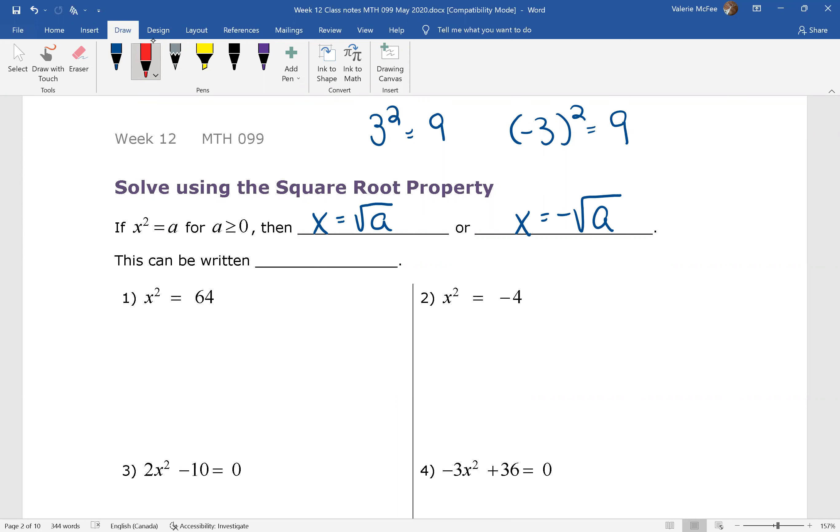Whenever you use the square root property you have not just one but two possible equations and people often forget the second one. You might see this written as x equals the positive or negative root of a.